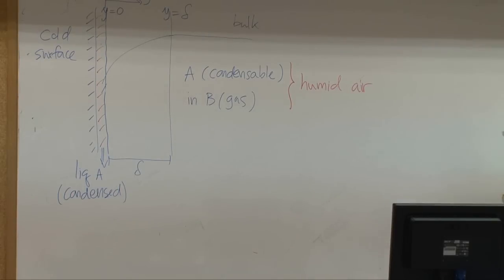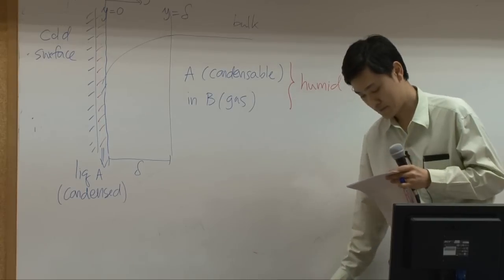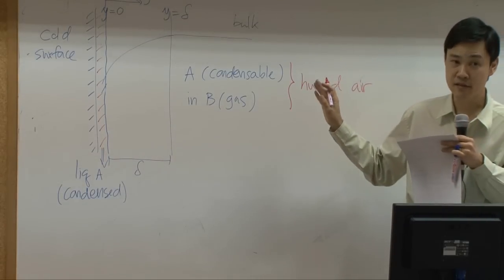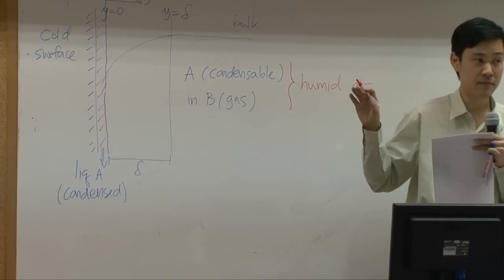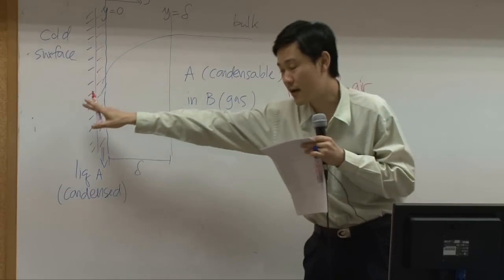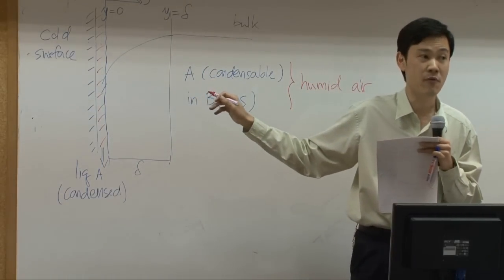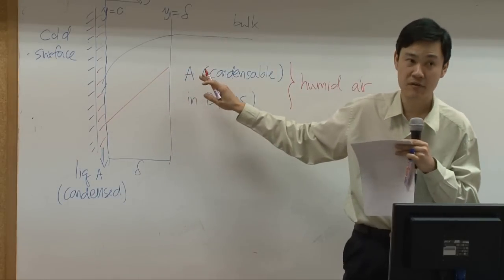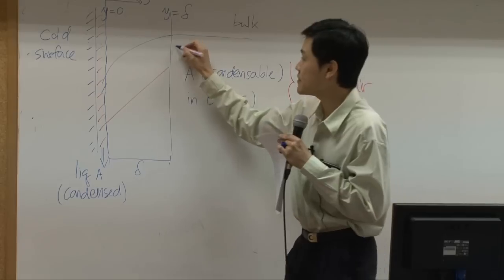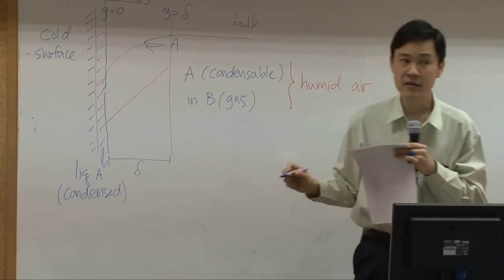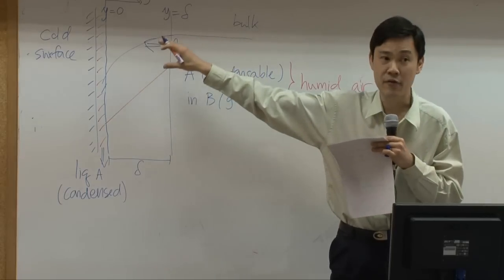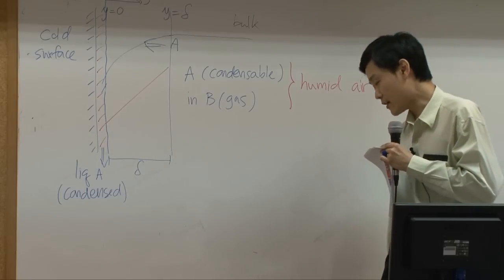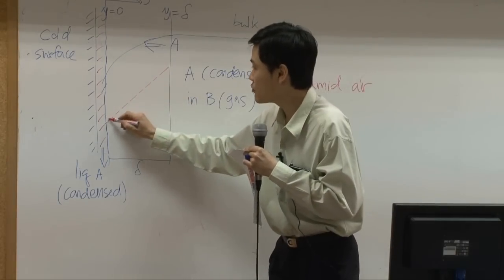What about the temperature profile? Normally, if there is one single component in this system, the temperature profile is supposed to be linear. Out here temperature is high, down there temperature is low, and in between it's supposed to be a linear profile. But in this case, since A moves from the right to the left, there will be energy that A carries. Such energy transport by molecular transport would cause the temperature profile to be nonlinear.